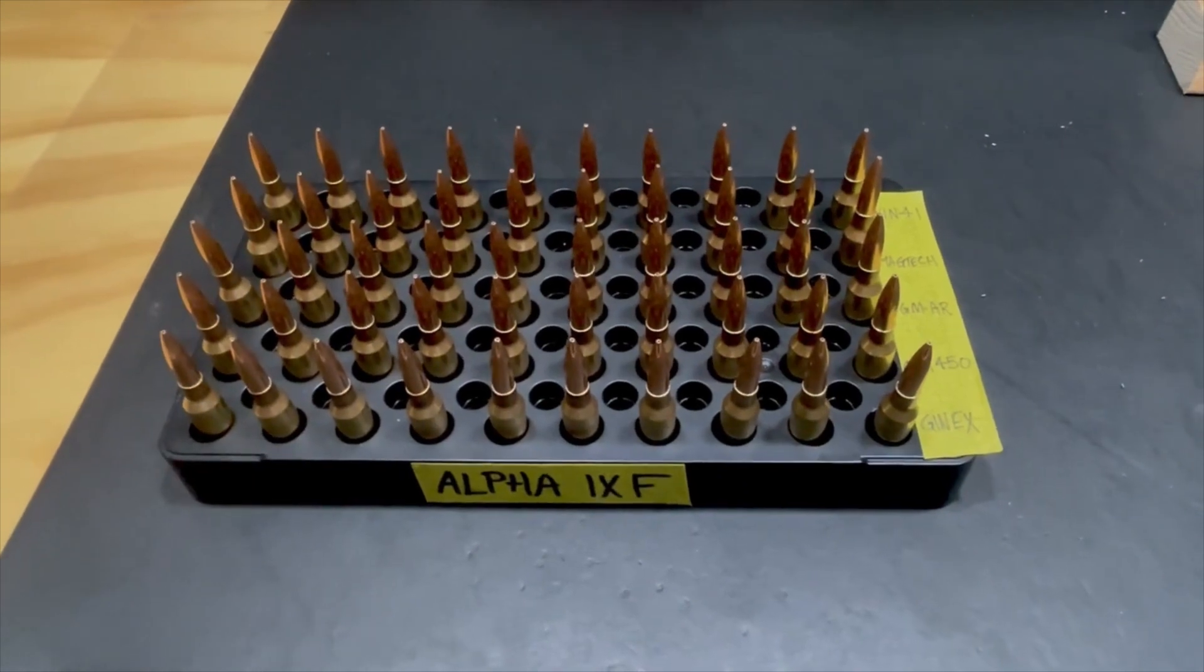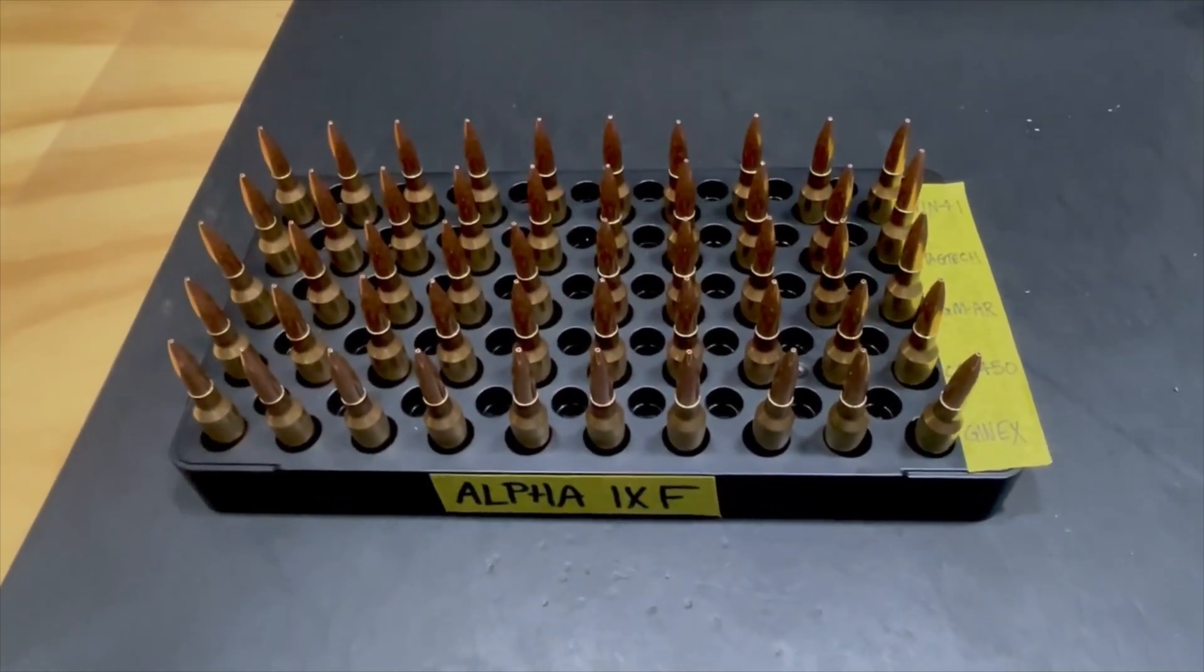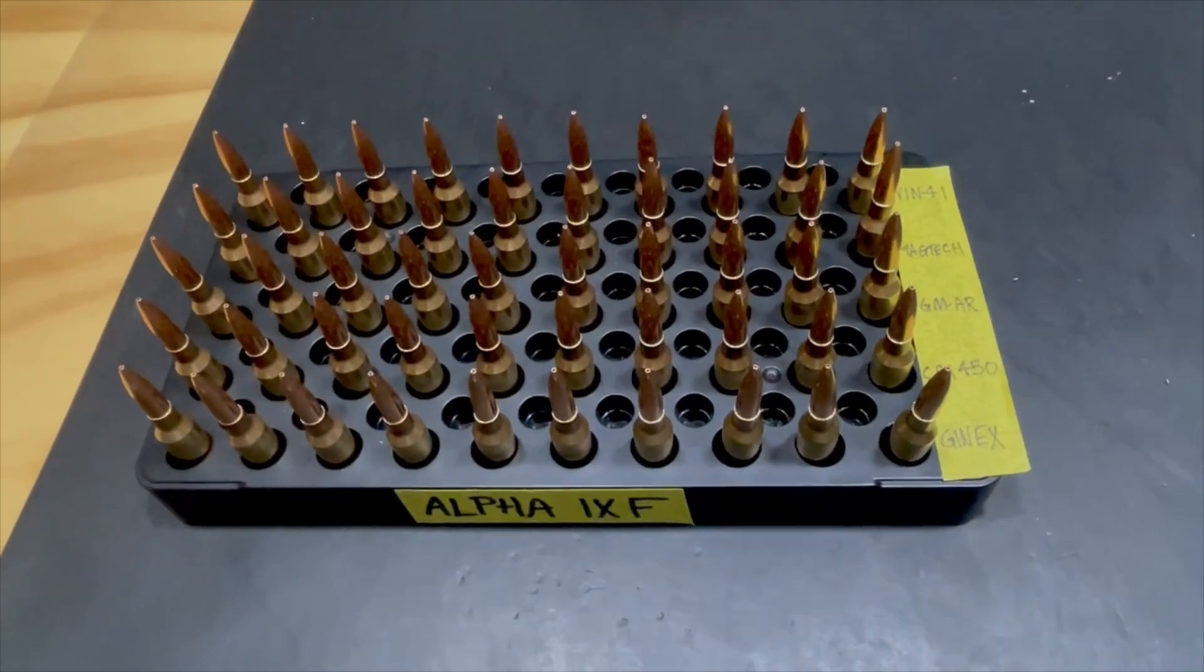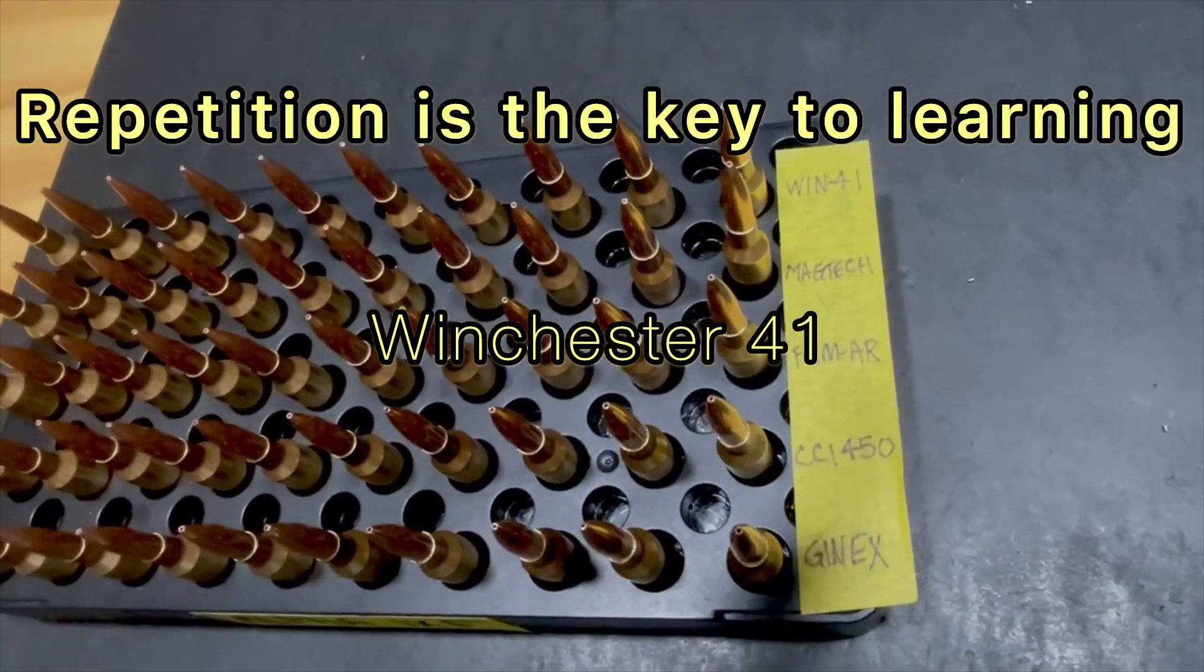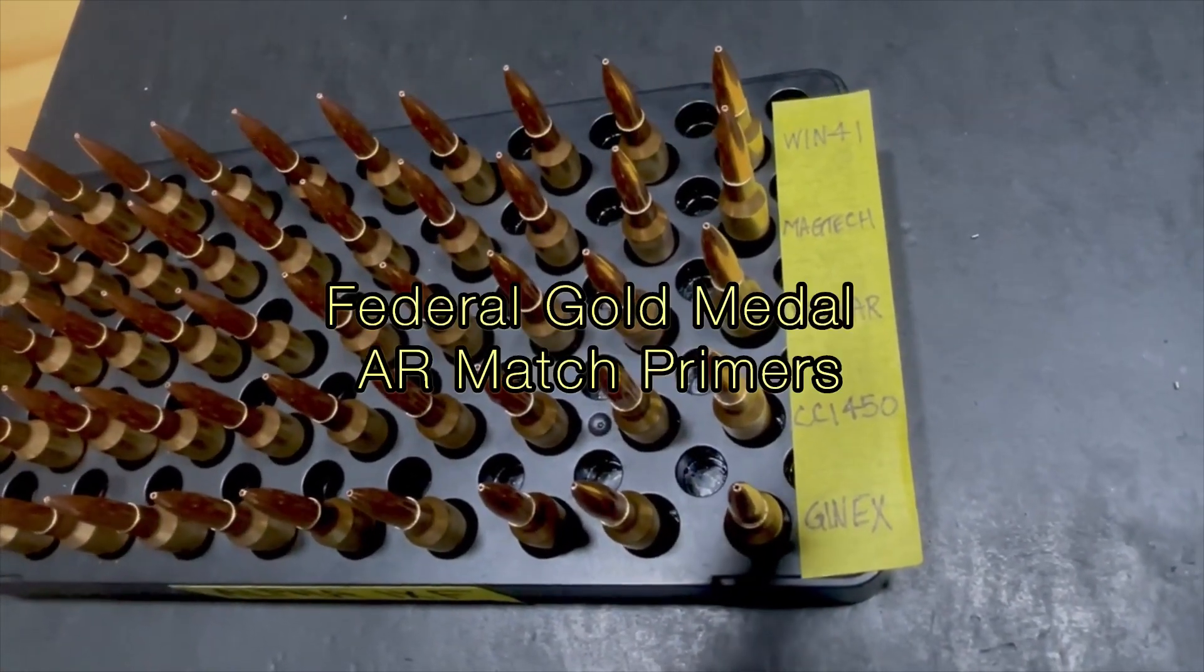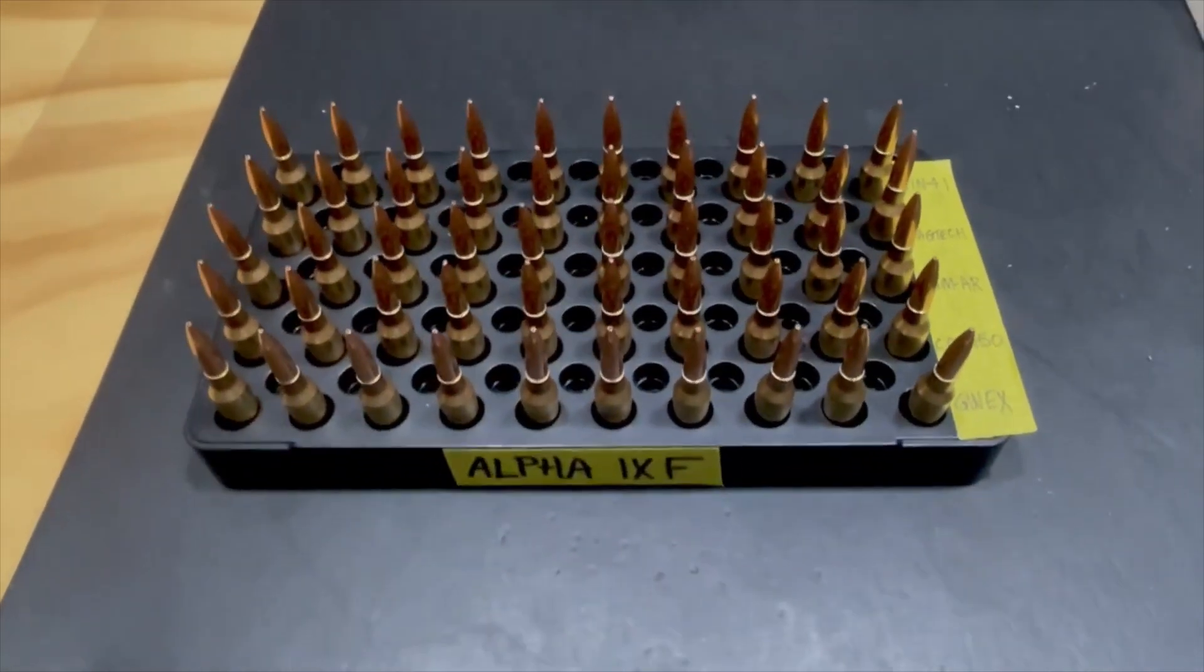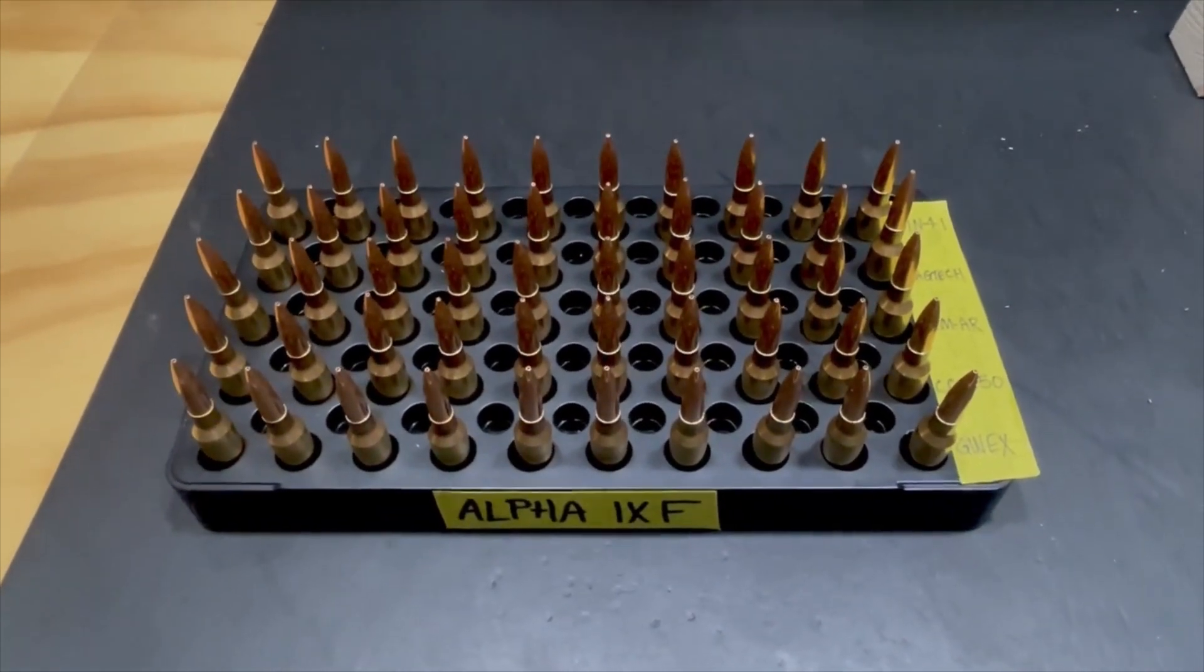All right, so we have 50 rounds all loaded up, ready to go. Sierra Match King 140 grain Boat Tail Hollow Point Bullets, Alpha One Time Fired Brass, and we are using Winchester 41, MagTec, Federal Gold Medal AR, CCI 450, and Gen X Primers. We will take these to the range and see how they compare and I will let you know.